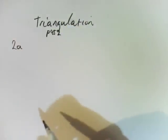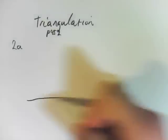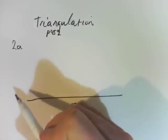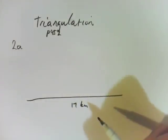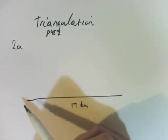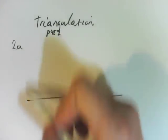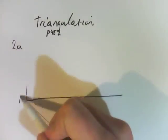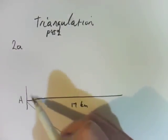So it says two fire-spotting towers are 17km apart on an east-west line. So they're 17km apart. A fire is spotted from tower A on a bearing of 130 true. So 130 is going to put us down here. So if this is A, 130 is going to put us there.